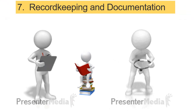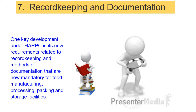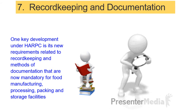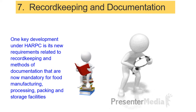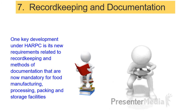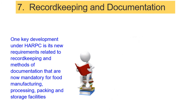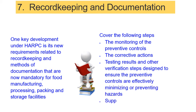Step 7: Record Keeping and Documentation. One key development under HARPC is its new requirements related to record keeping and methods of documentation, now mandatory for food manufacturing, processing, packing, and storage facilities. Previously, under the Bioterrorism Act, the FDA could only require a food company to maintain records enabling food to be traced through the supply chain. Now, HARPC and the Supply Chain Provision under FSMA require that records related to food hazards and process control systems be established and maintained for no less than two years, covering monitoring of preventive controls, corrective actions, testing results, verification steps, supply chain programs, and trainings.